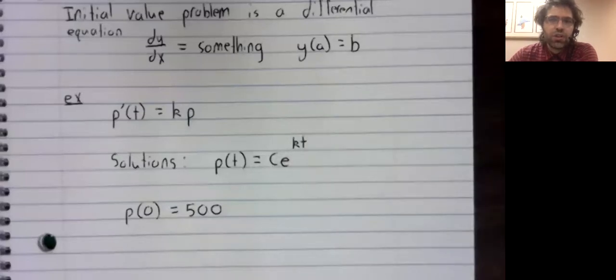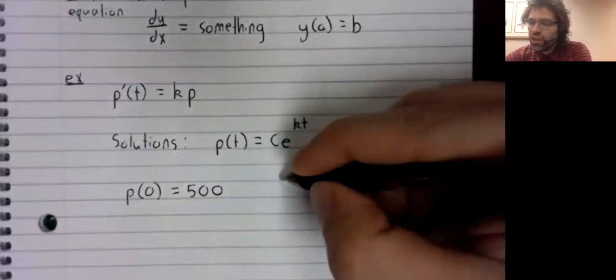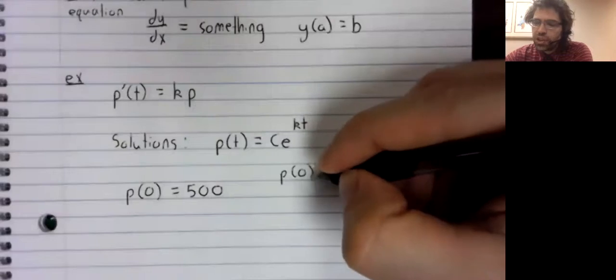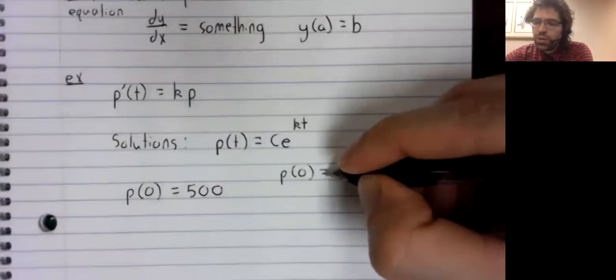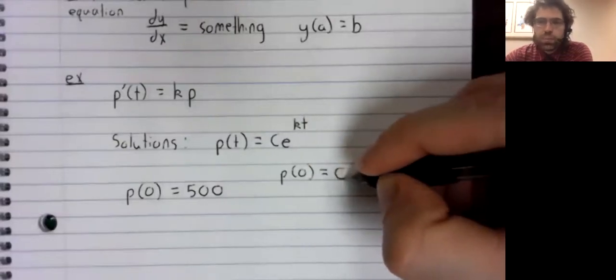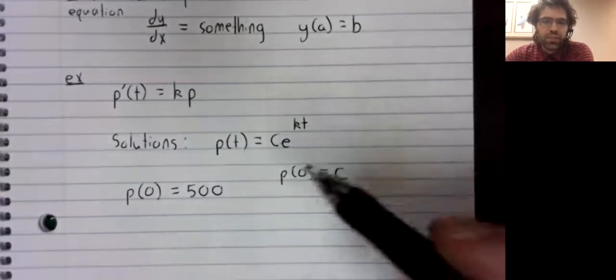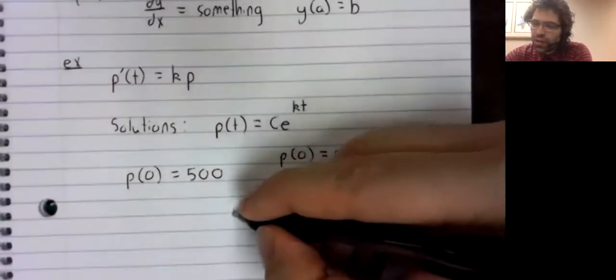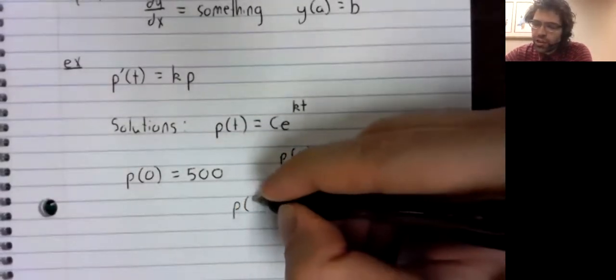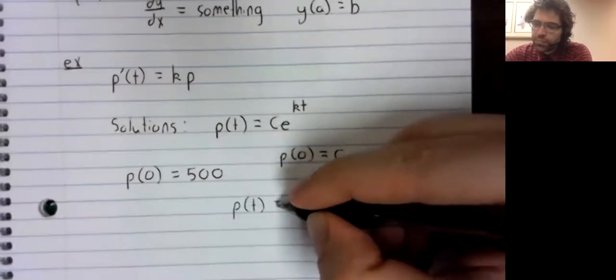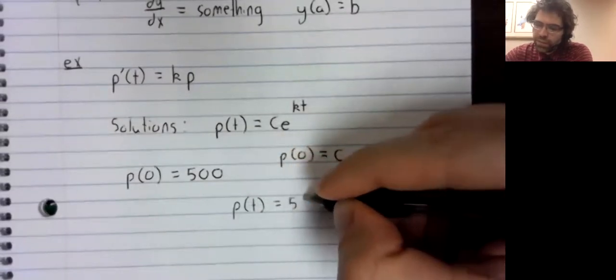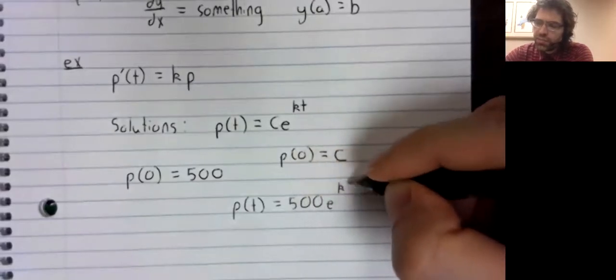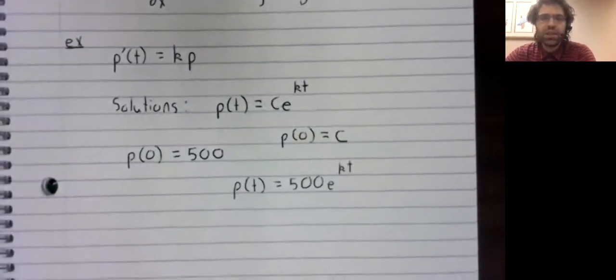we suddenly crash down to a single solution. p of zero equals C. So the statement that p of zero equals 500 tells us what C has to be.